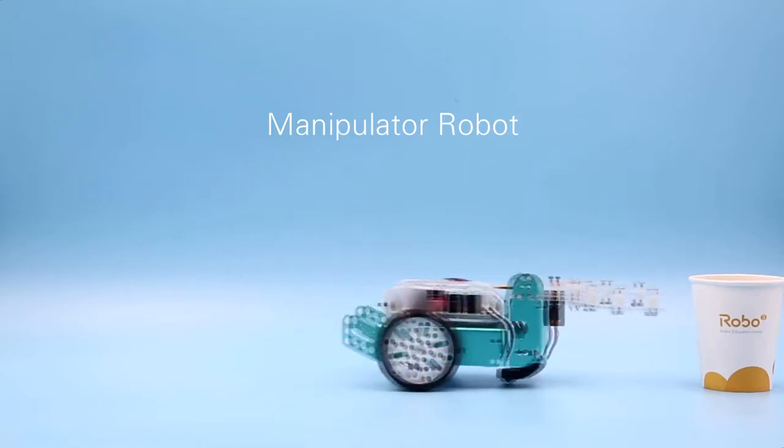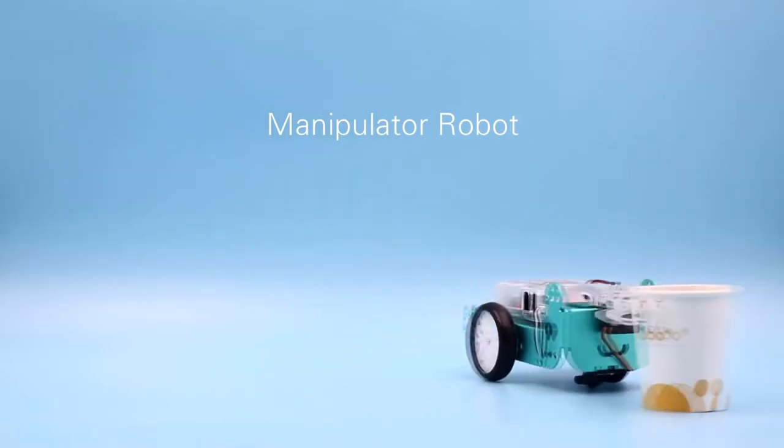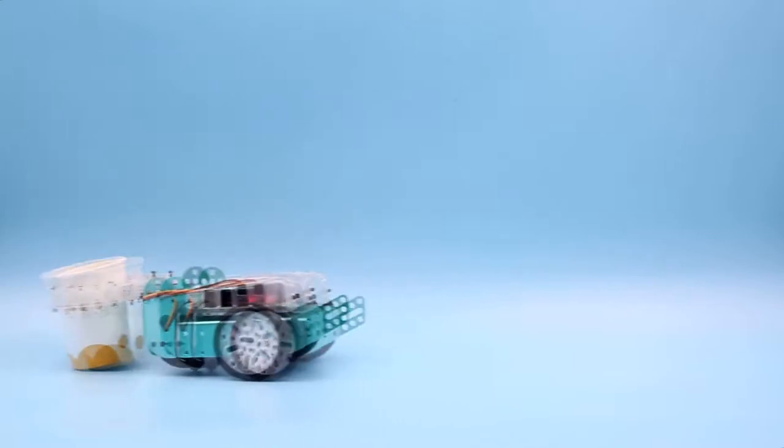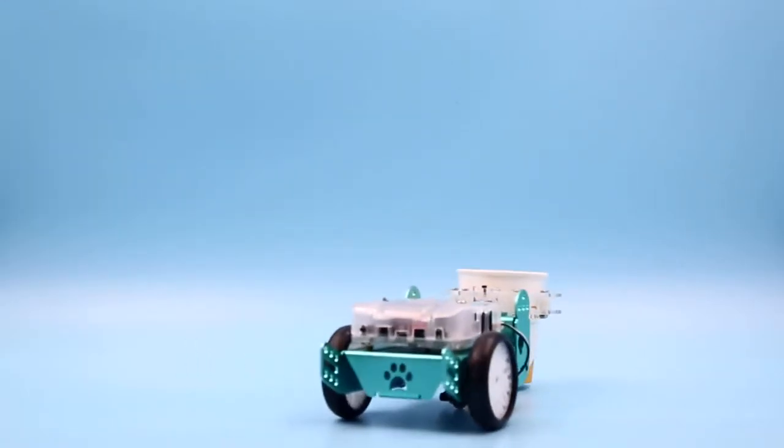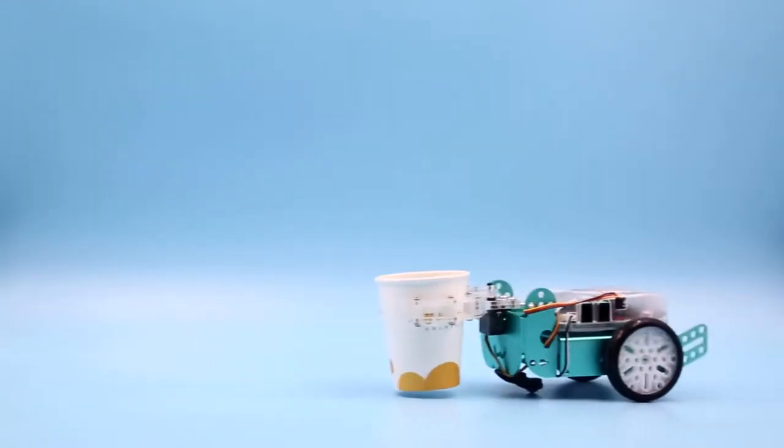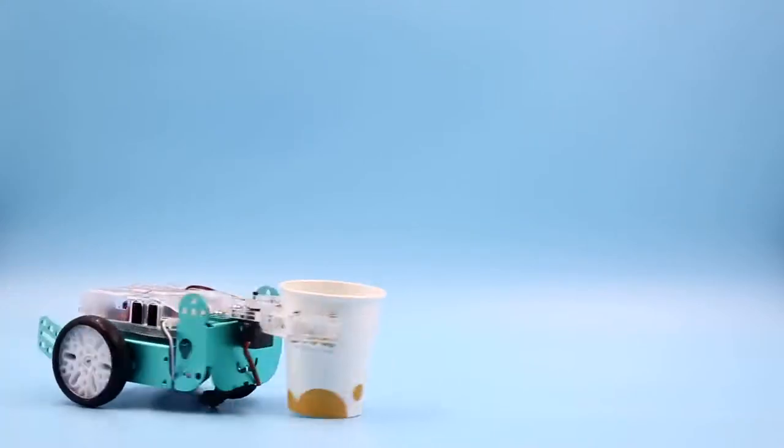Manipulator robot is a little assistant who can help you move things. Control the claw movement by using the top and bottom buttons of the infrared remote controller. Go and get everything you like.